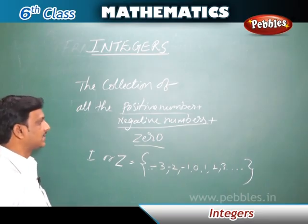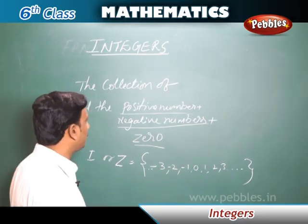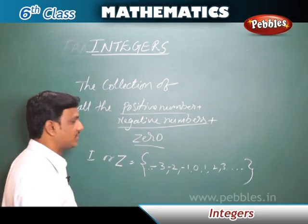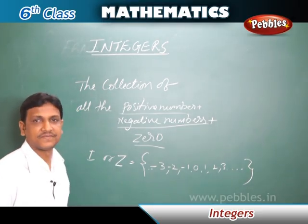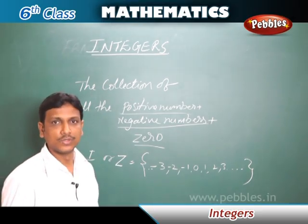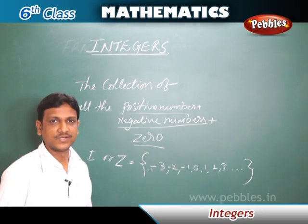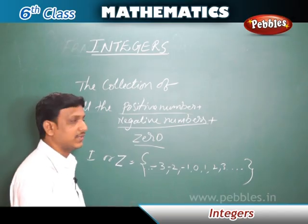Now, let us learn what are negative numbers. We know positive numbers. Generally, the numbers that we use after zero — 1, 2, 3, 4 — all these are positive numbers, and we know zero.